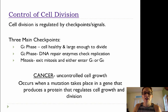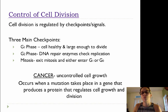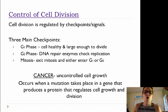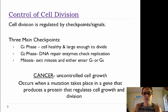At the end of mitosis, a cell can either enter G1 again and go through the cell cycle again, preparing and getting ready to divide again, or it can enter G0, which is sort of a steady state where it's not getting ready to divide at all.